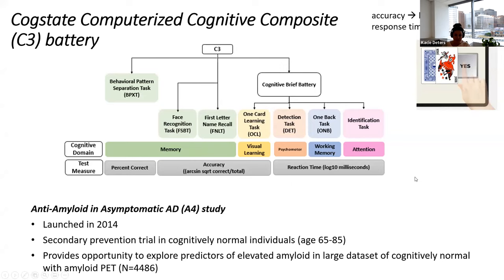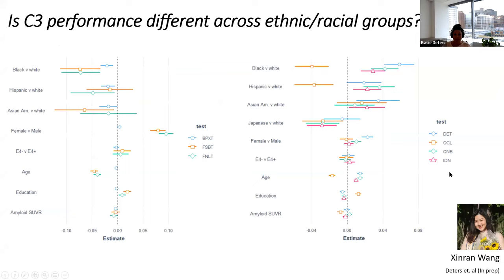For this C3 study, we used data from the Anti-Amyloid and Asymptomatic Alzheimer's Disease study, or A4 study, launched in 2014 — a secondary prevention trial in cognitively normal individuals providing opportunity to explore predictions of elevated amyloid in large datasets with PET. Much of this work was done at UC San Diego with PhD student Shinran Wang. On the x-axis we have estimates and confidence intervals. We can see that pretty much all of these tests — including the face-name learning test and behavioral pattern separation test — were significantly different in Black versus white individuals.